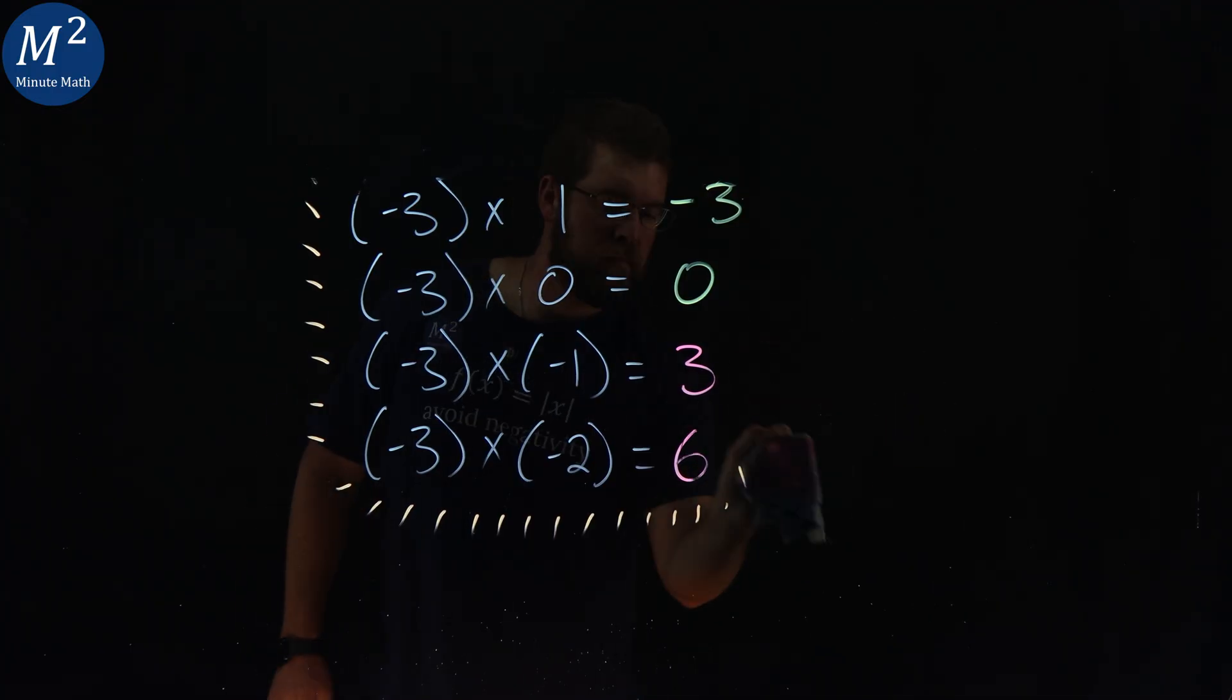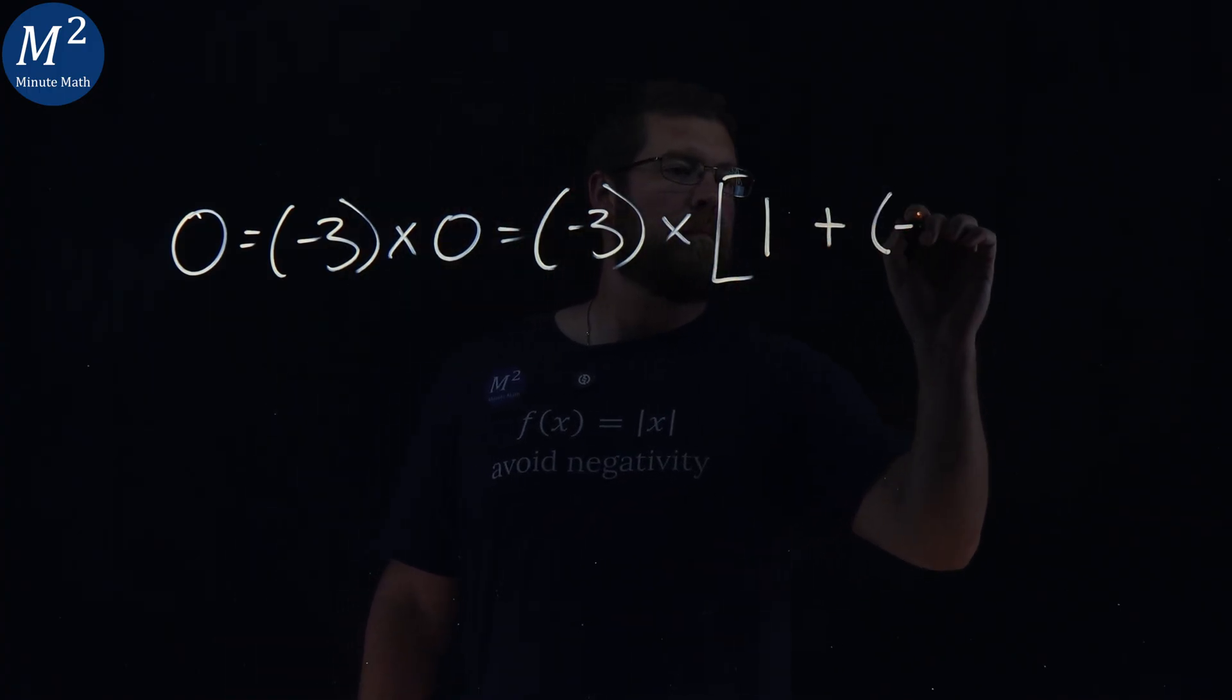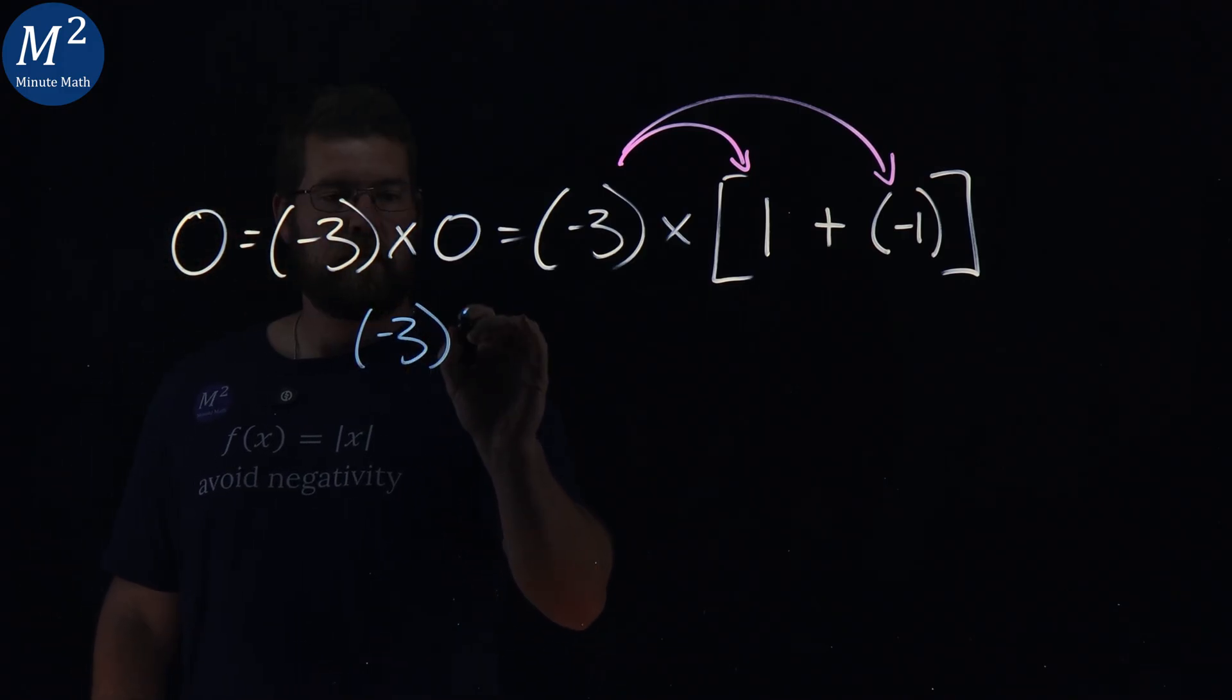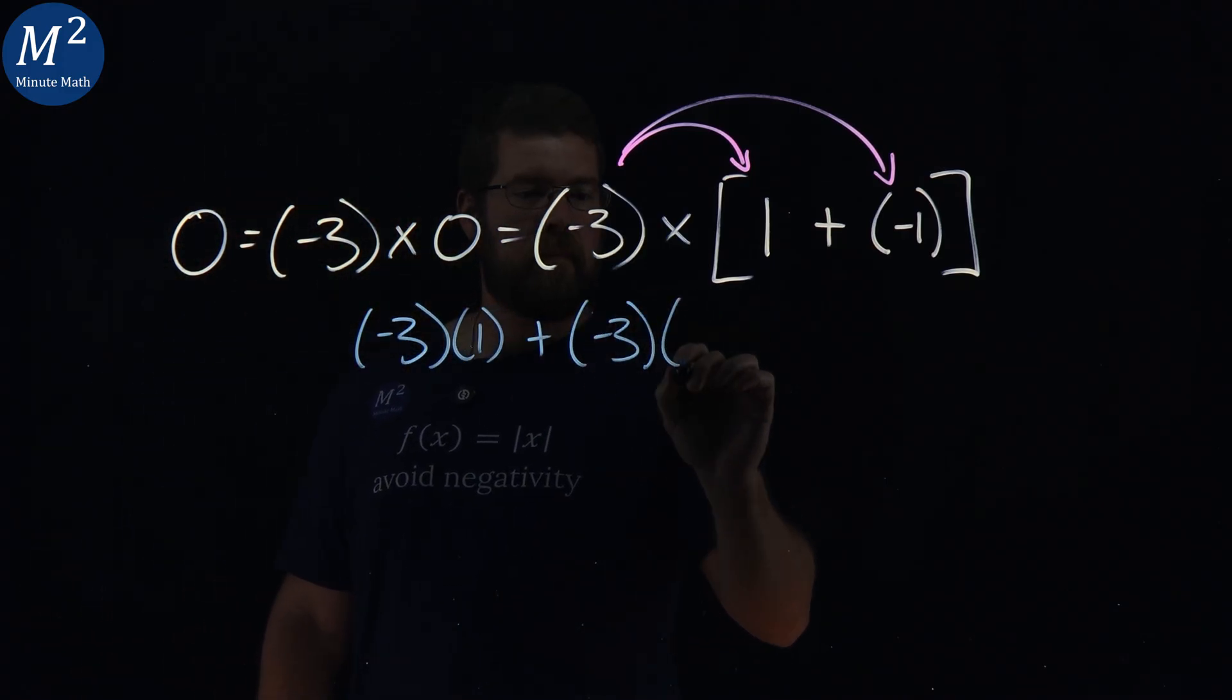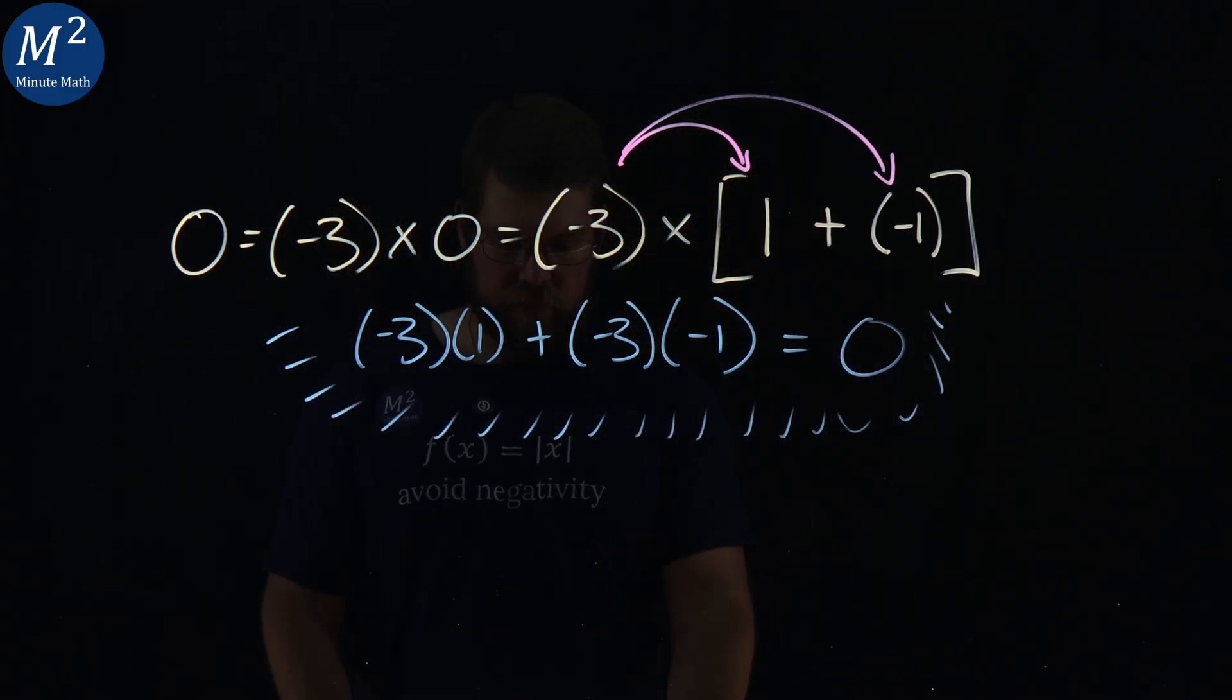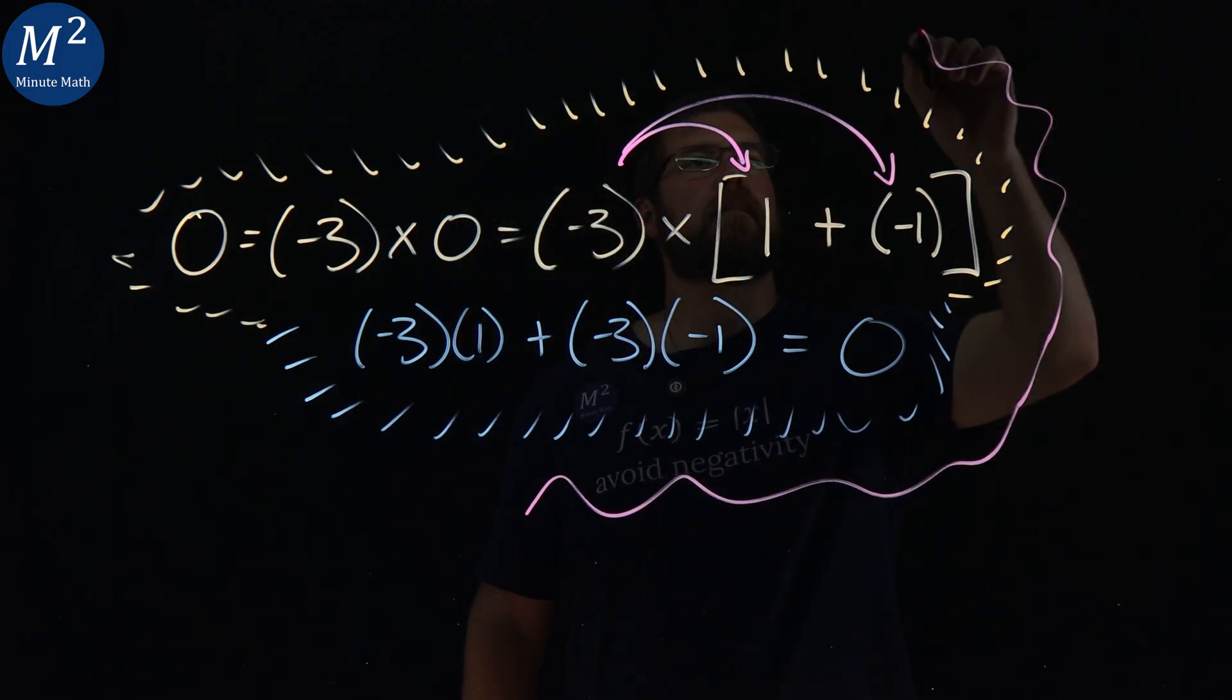Let's double check this with the distributive property. 0 equals negative 3 times 0, but 0 is also 1 plus negative 1. So, expanding that gives us negative 3 plus something equals 0, and that something must be positive 3. So, again, negative 3 times negative 1 equals a positive 3.